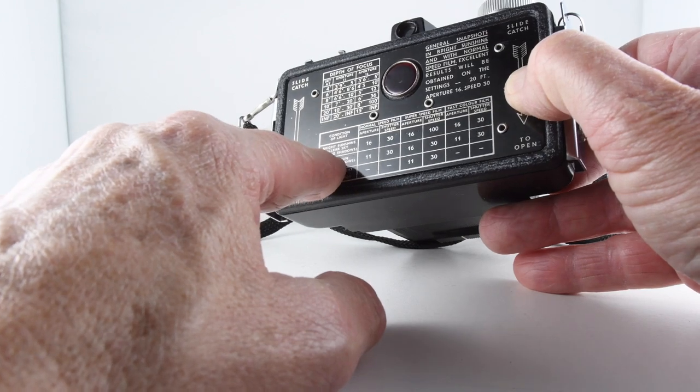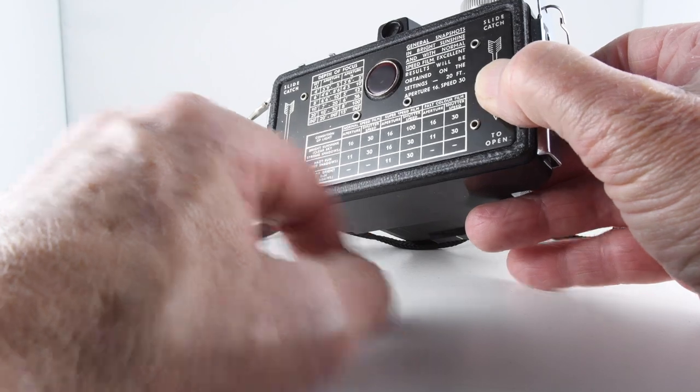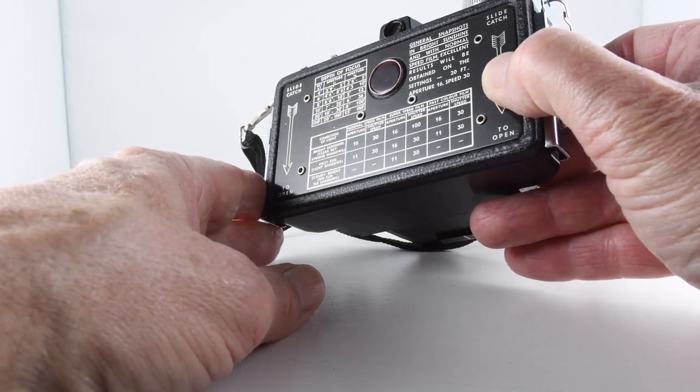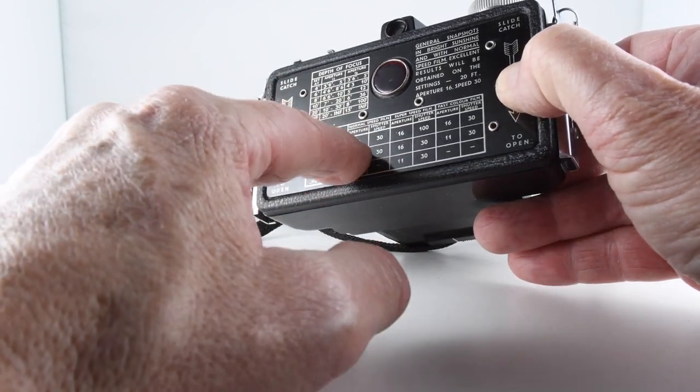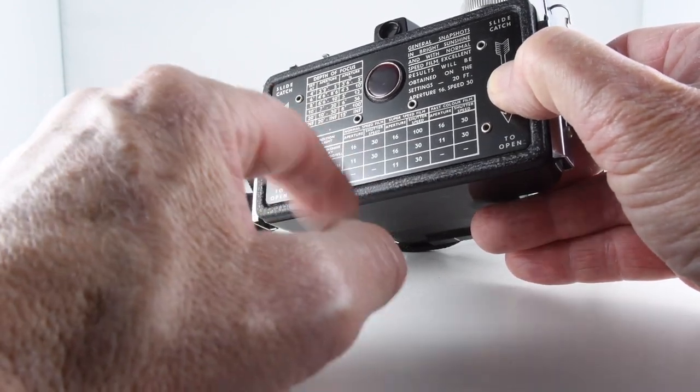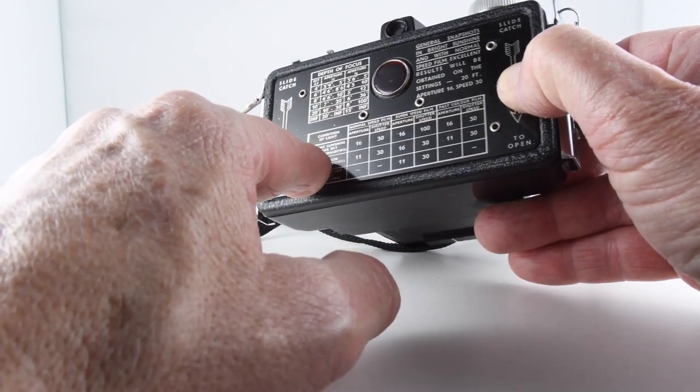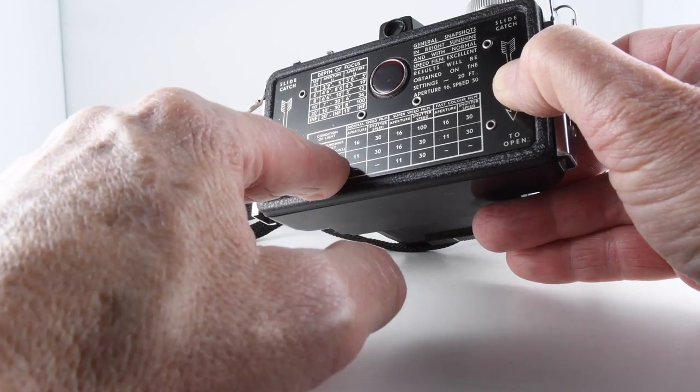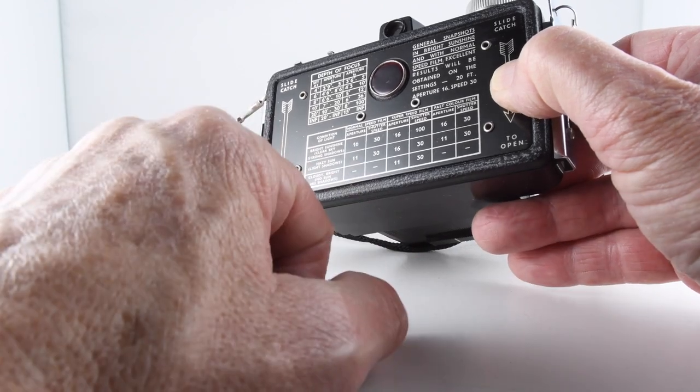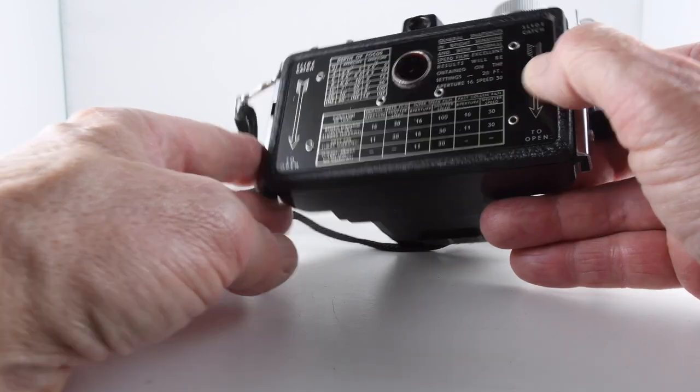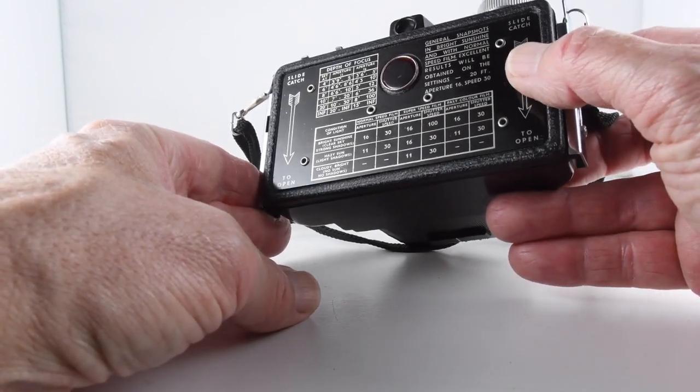And then I do find this amusing, the little scale here guide to help us with our exposure. So fast color film, super speed film, normal speed film, and then we're given our f16 f11 scale, bright sunshine, clear sky, strong shadows, hazy sun, light shadows, and cloudy bright, no sun, no shadows. So I really do find that fascinating to see that someone has actually sat down and worked those out.